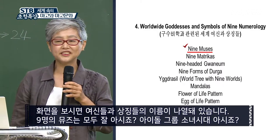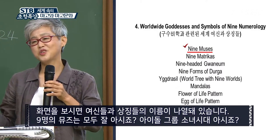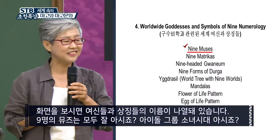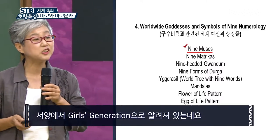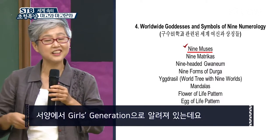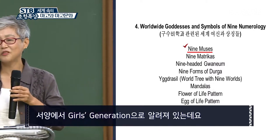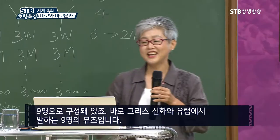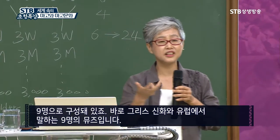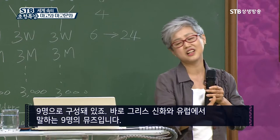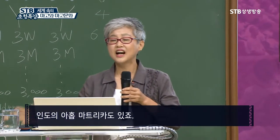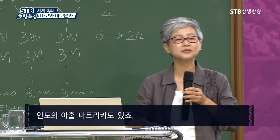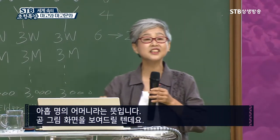Everyone knows nine muses, right? Even 소녀시대 — Girls' Generation, as they're known in the Western world — they are made of nine girls, and you have nine muses here. That's in the Greek, European context. Nine matrikas — this is from India — and matrikas means nine mothers. These are the images we will see.